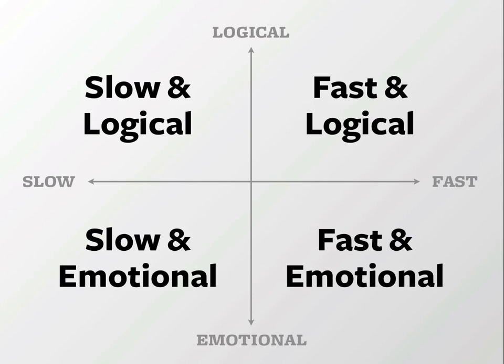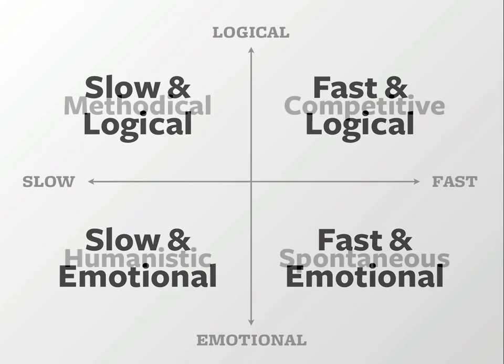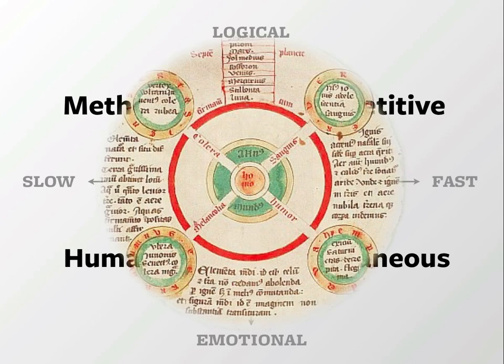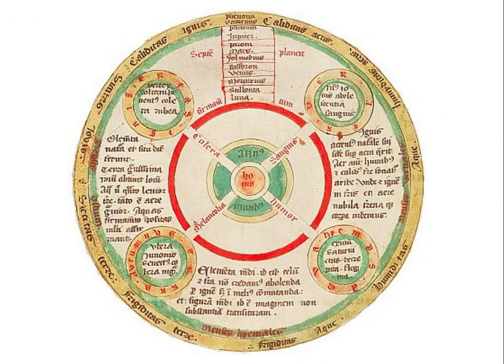These are pretty cumbersome names though, so we follow the lead of Future Now, who named these types methodical, competitive, humanistic, and spontaneous. These four types aren't new by the way. Though they've gone by different names, you'll find parallels to these four decision modes and personality breakdowns throughout history.